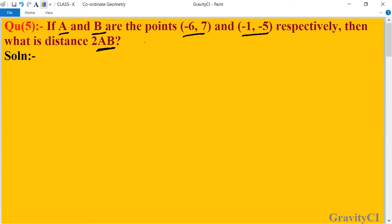First of all, we find AB. The coordinate of A is (-6, 7) and the coordinate of B is (-1, -5). Using the distance formula, AB equals...